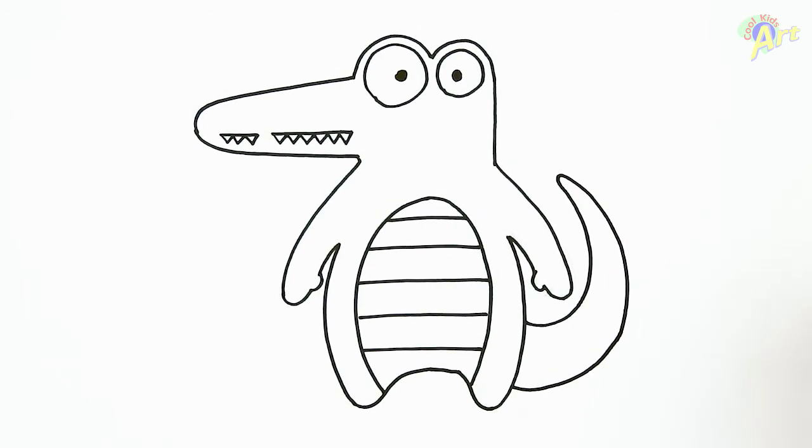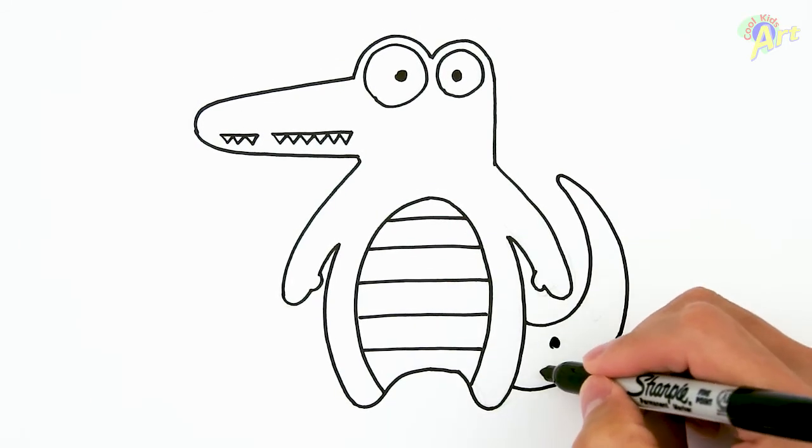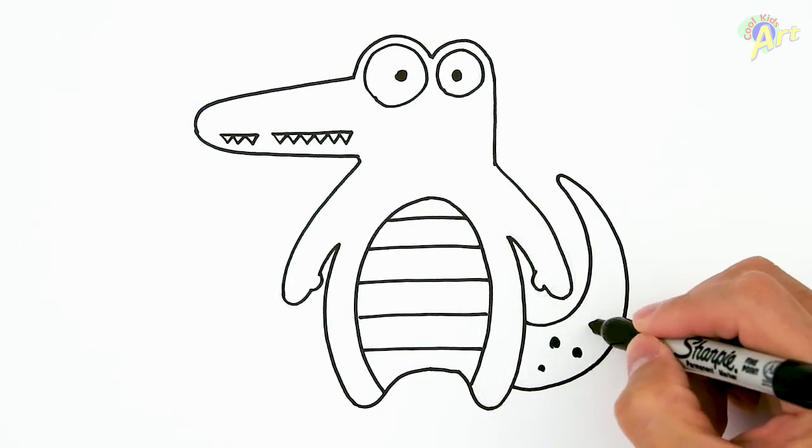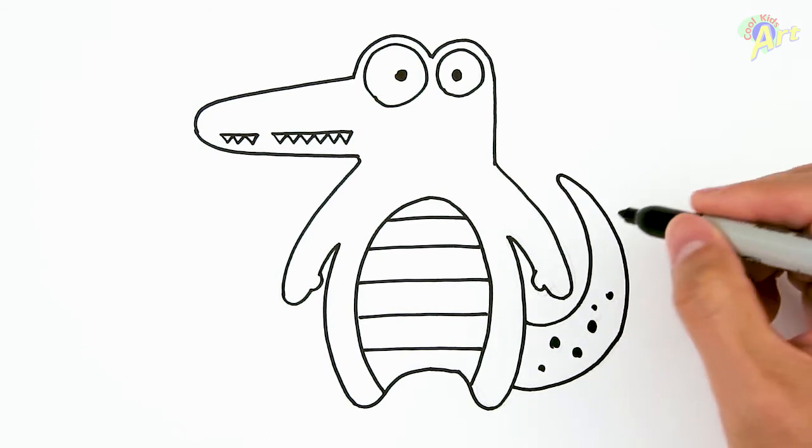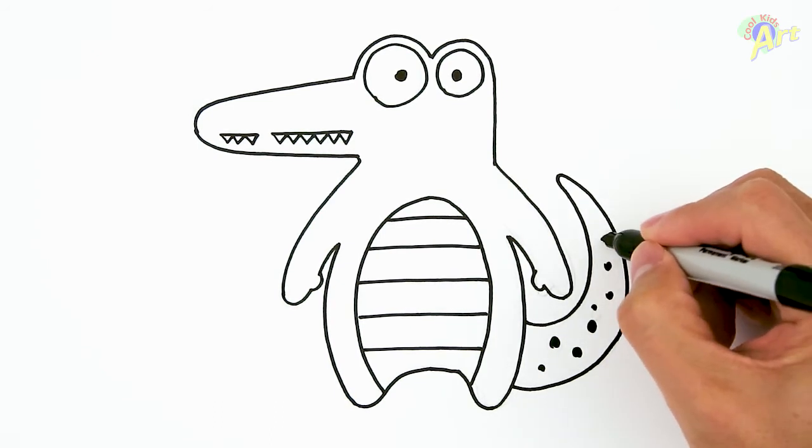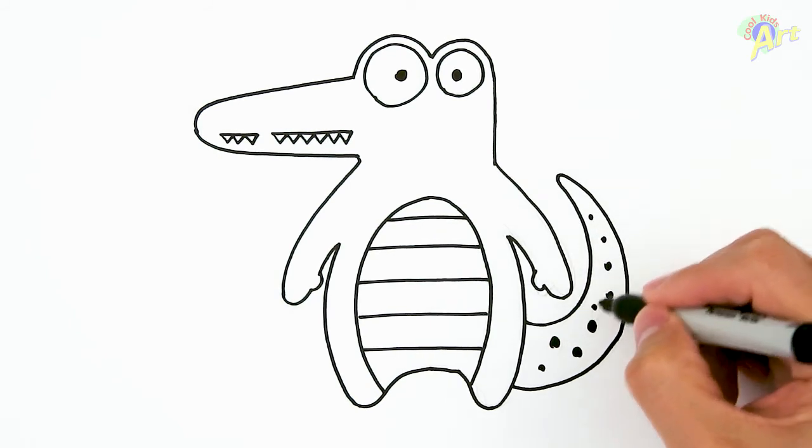Okay, and then we're going to draw some details here. Just put some circles around, shade it in so it looks like a tail. Some kind of texture to the alligator.